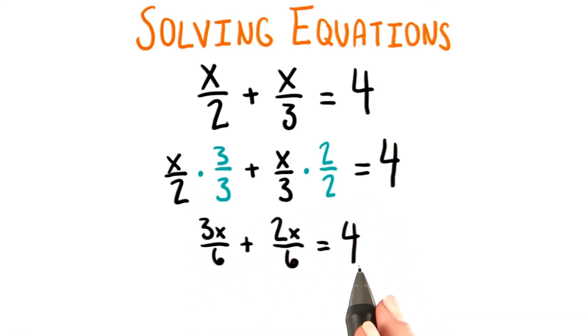Carrying out this multiplication gives us this, and then we just need to combine like terms. We end up with 5x over 6 equals 4.